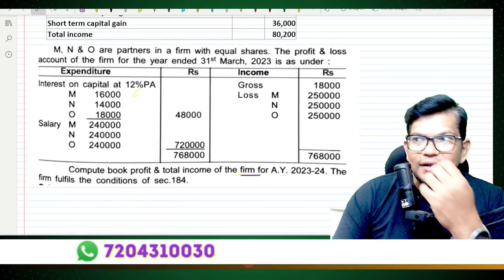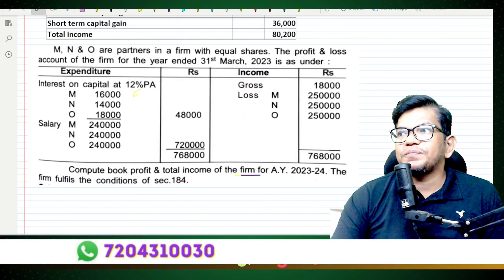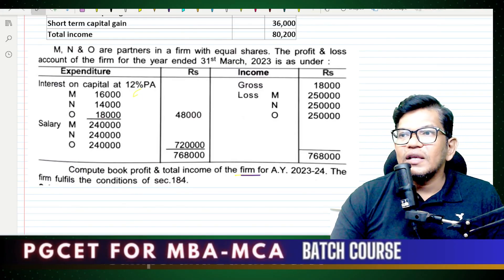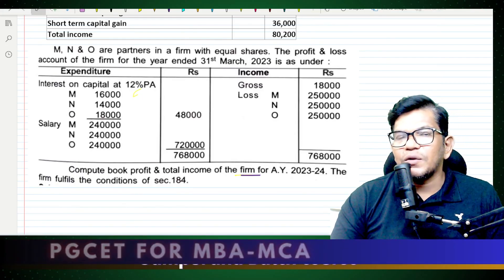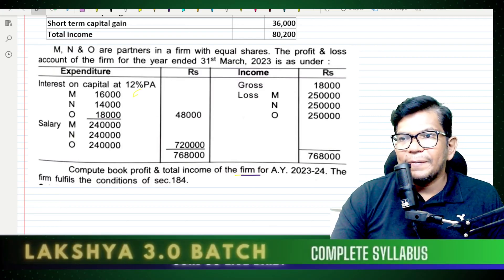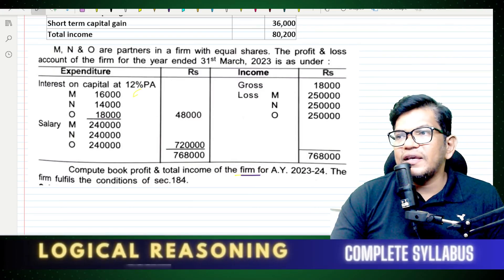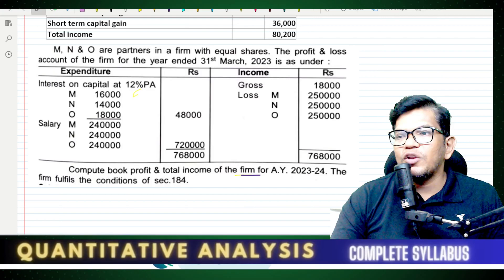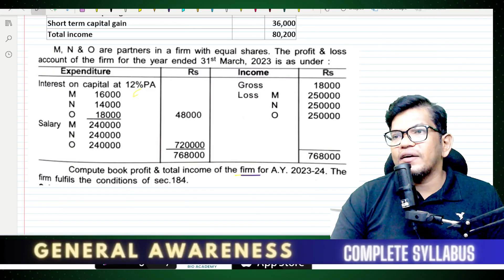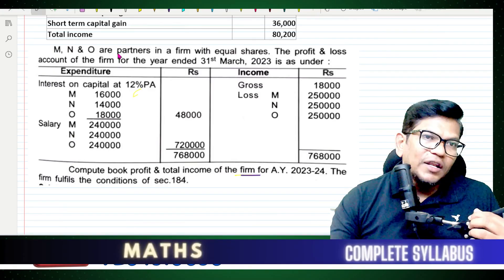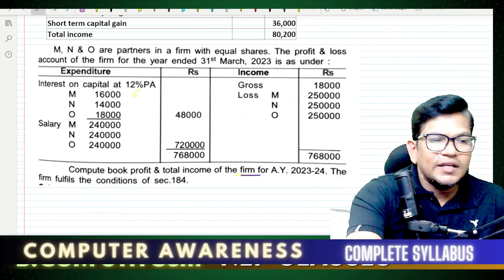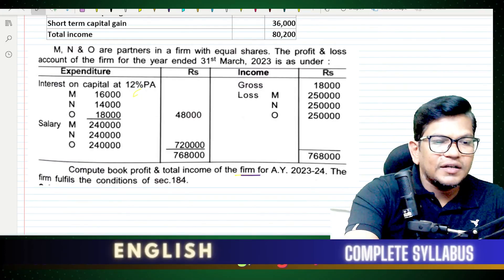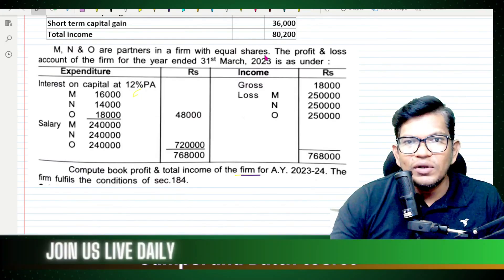Let's begin and start the preparation now. This is what we are going to do. M and O are the partners — they are the partners now — sharing profit equally in a firm.